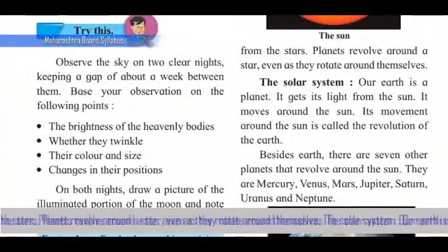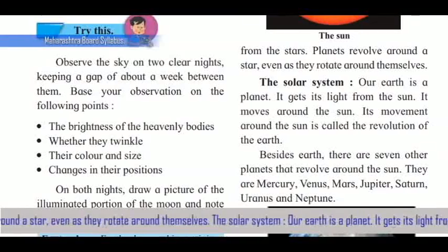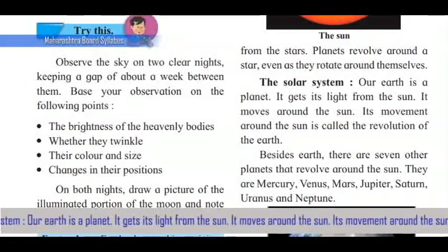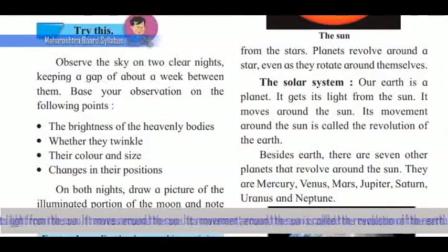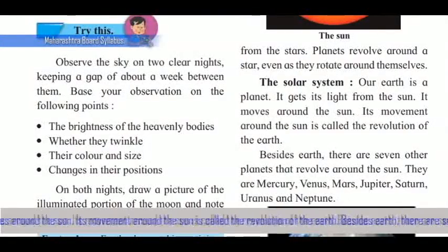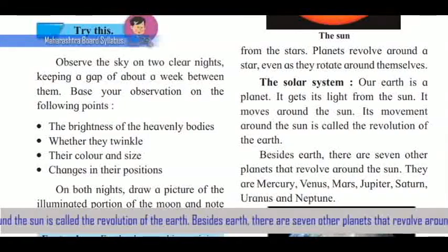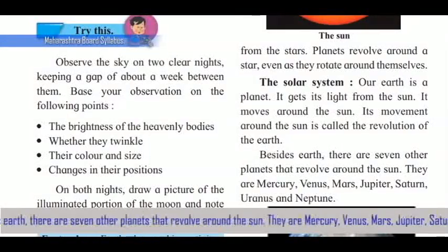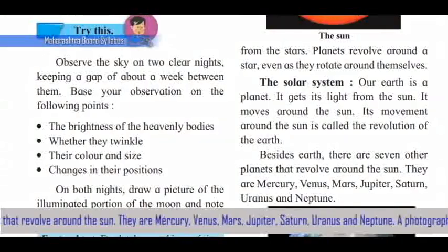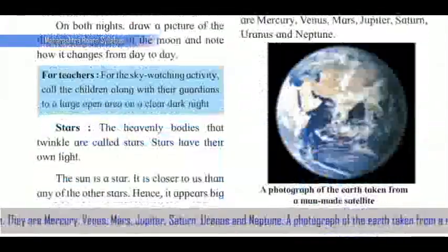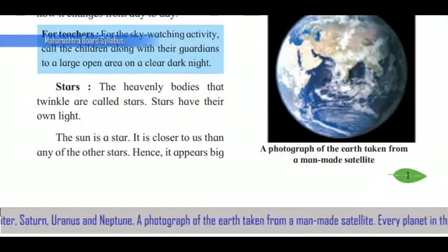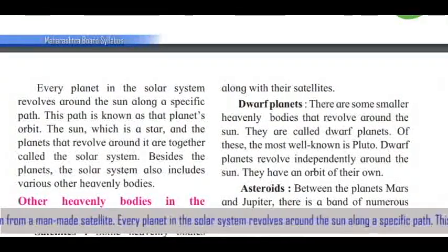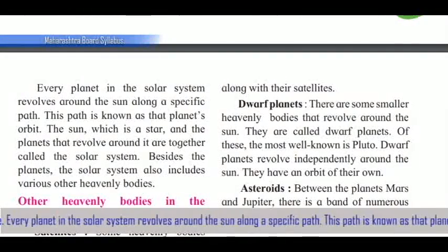Planets revolve around a star even as they rotate around themselves. Our Earth is a planet — it gets its light from the Sun. Its movement around the Sun is called the revolution of the Earth. Besides Earth, there are seven other planets that revolve around the Sun: Mercury, Venus, Mars, Jupiter, Saturn, Uranus, and Neptune.